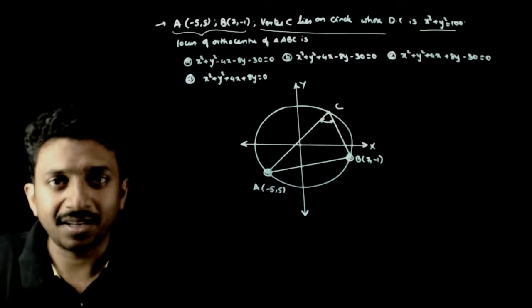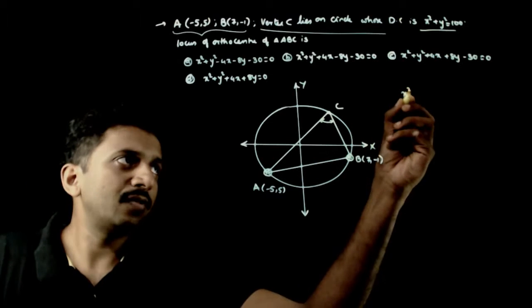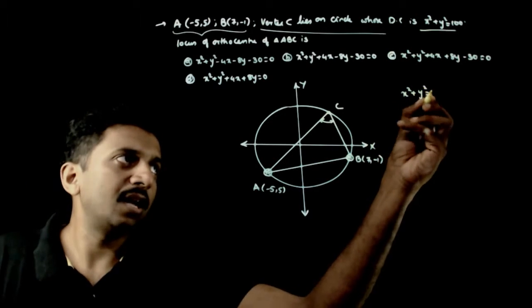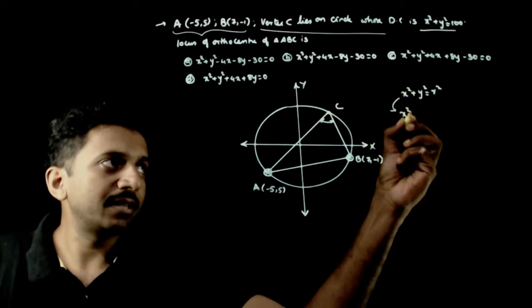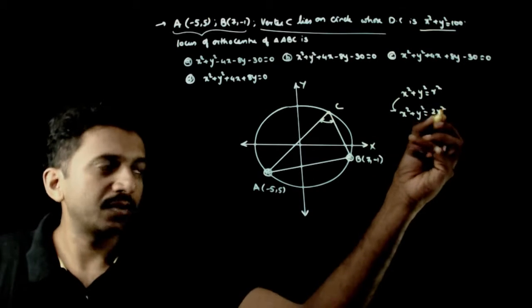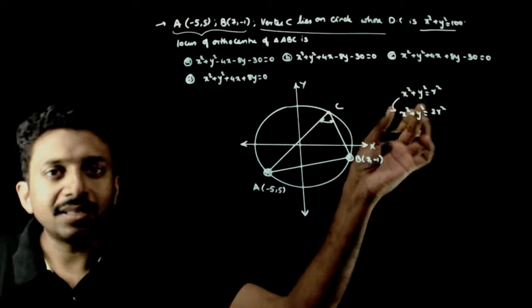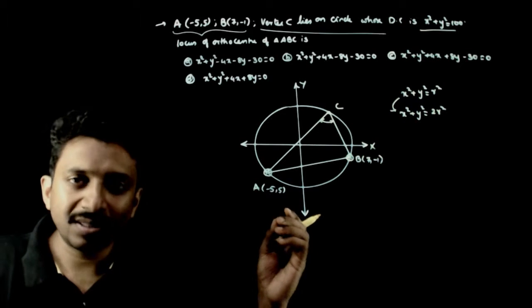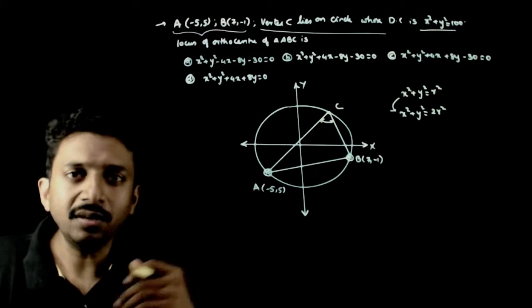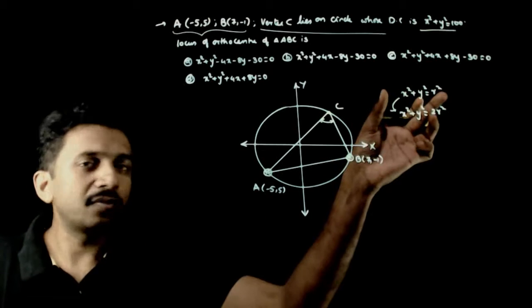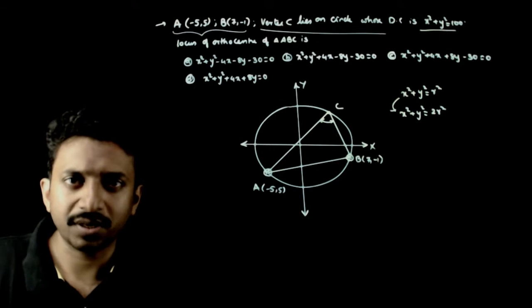The concept here is the director circle. What is a director circle? If x square plus y square is equal to r square is a circle, then its director circle will be x square plus y square is equal to 2r square. So, a director circle is a circle with the same centre as the original circle and radius equal to root 2 times the original radius.